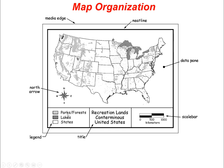Then we have a legend, which is important as well. It tells us what we're seeing on the map. What's key with the legend is that you never want a title that says 'legend,' because anybody who looks at a map already knows what a legend is. Instead, be more descriptive — for example, 'parks, forests, lakes, and states,' referring to natural areas of the U.S. Either leave off the title if you can't find a good descriptive one, or give it a good descriptive title. Don't use the word 'legend.'